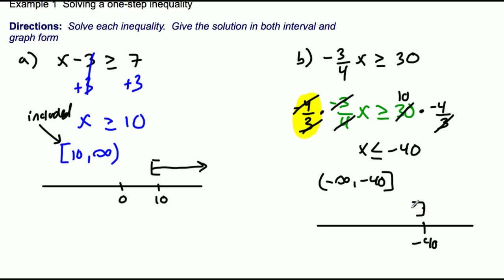The left position of our interval notation is always the left or the smallest number, which is negative infinity out here, and then the biggest number it goes to is negative 40 with the bracket.